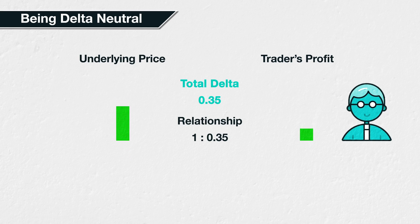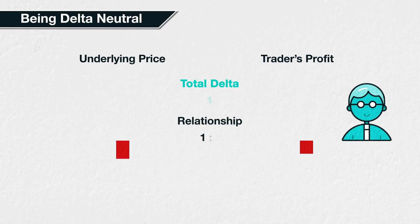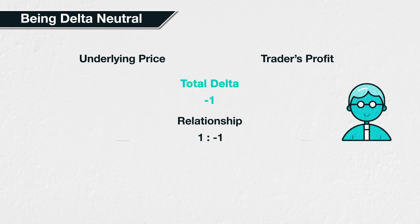In both cases, a $1 increase in the Bitcoin price will lead to a 35 cents increase in profit. With a delta of 1, for example a deep in the money call option, the position will behave almost the same as being long the underlying with a position size of 1. With a delta of minus 1, for example a deep in the money put, the position will behave almost the same as being short the underlying with a position size of 1.